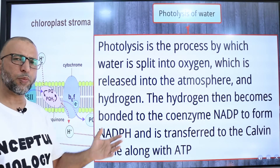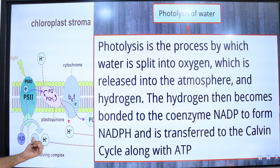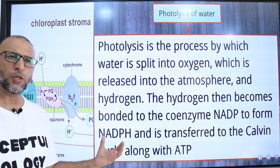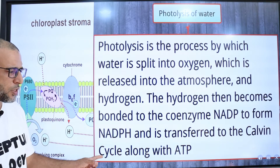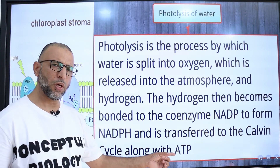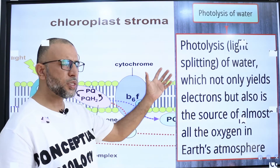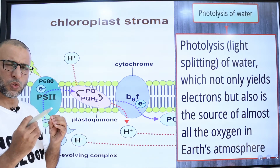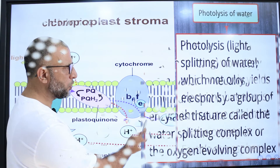Photolysis is the process by which water is split and oxygen is released into the atmosphere. The hydrogen then becomes bonded to the coenzyme NADP to form NADPH, and is transferred to the Calvin cycle along with ATP to fix atmospheric carbon dioxide. Photolysis of water not only yields electrons but is also the source of almost all the oxygen in Earth's atmosphere.